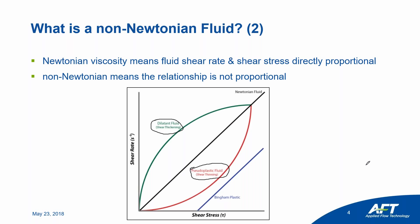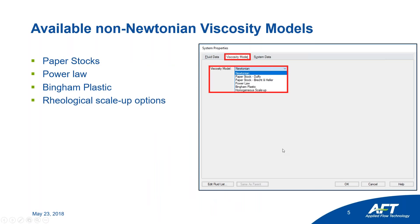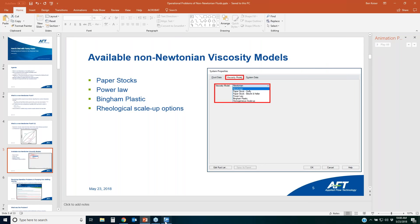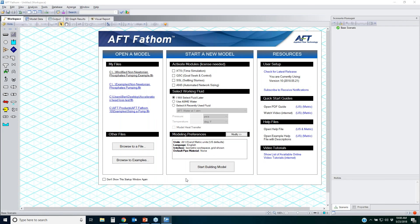Both shear-thickening and shear-thinning behaviors can be modeled with a power law model in AFT Fathom. In Fathom, you can access the different viscosity models by going to the System Properties window. Here's a quick look at AFT Fathom 10 — one of the new things is that when you first start the software, in the startup window itself you have access to modify user preferences from the get-go.